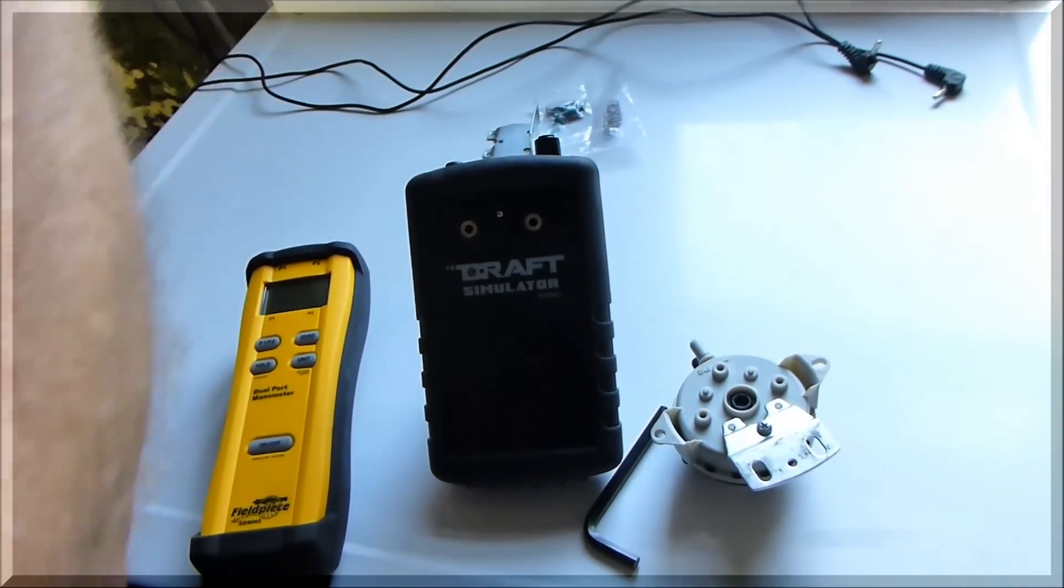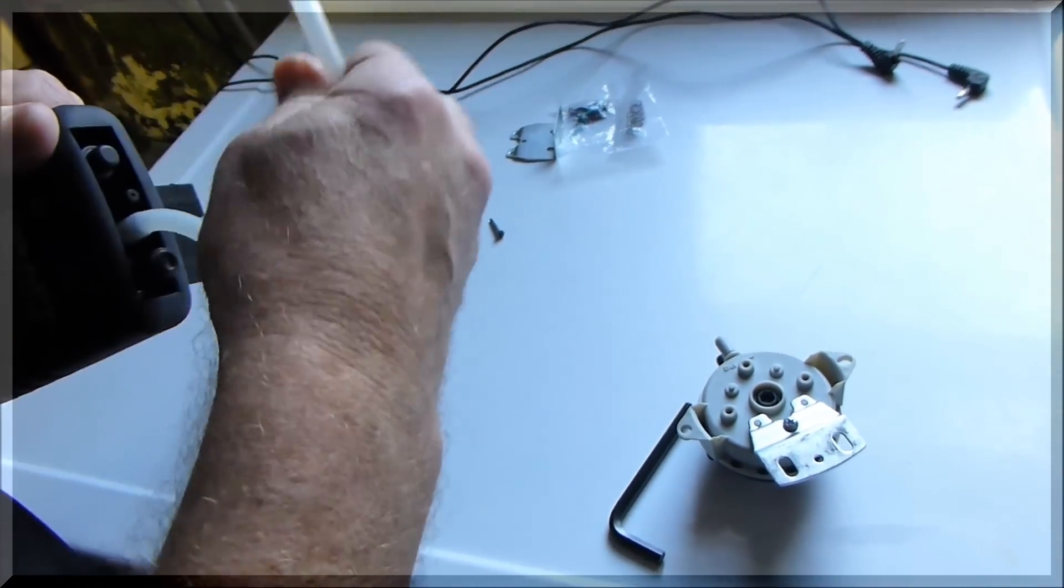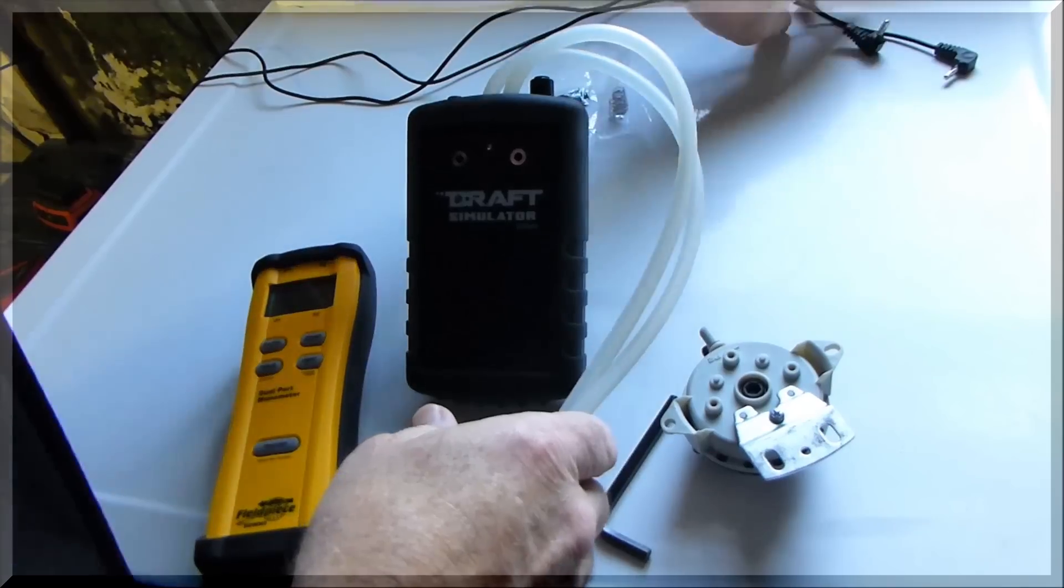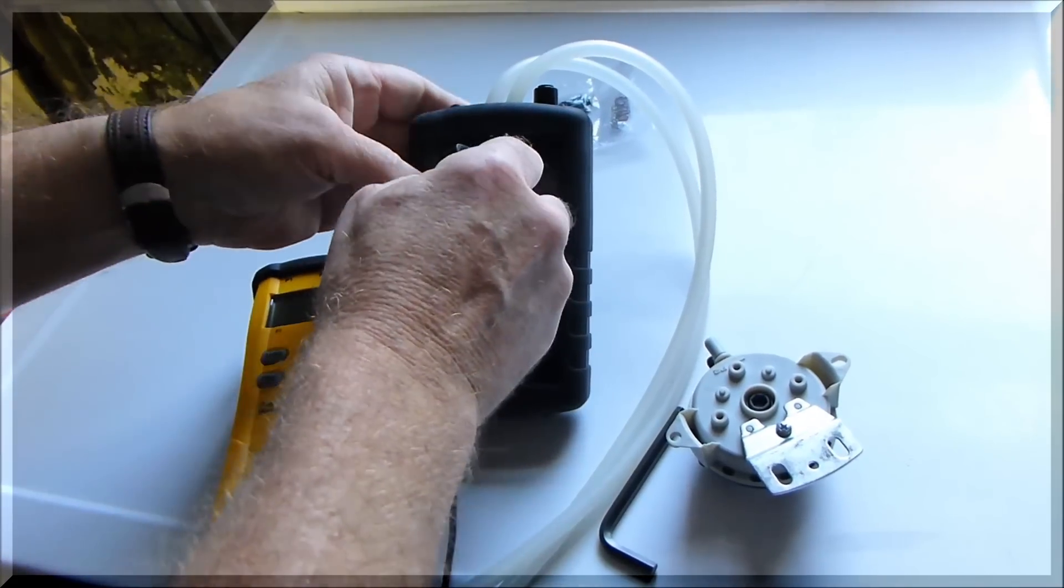Basically the same thing that you would do in a test. You're going to hook up the hoses to the top of the DDSM1 and take the leads and plug them into the front of the DDSM1.